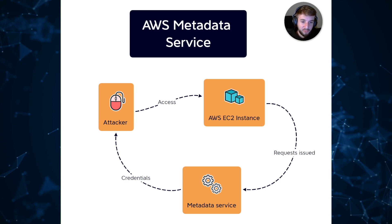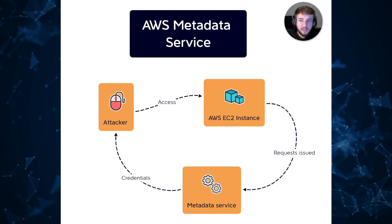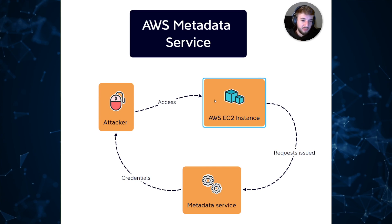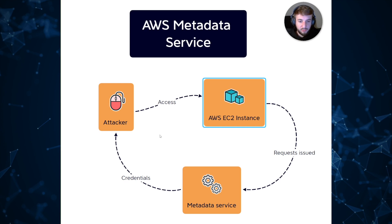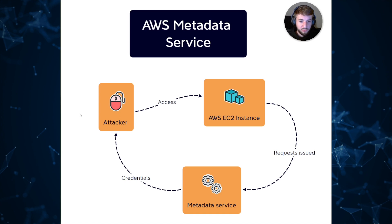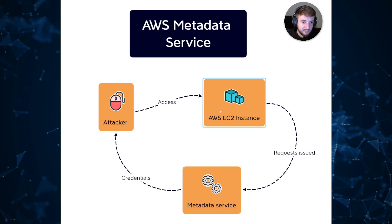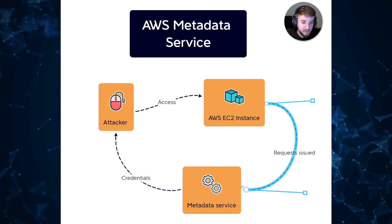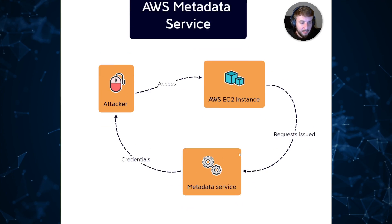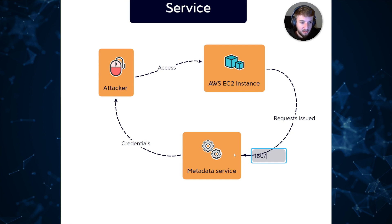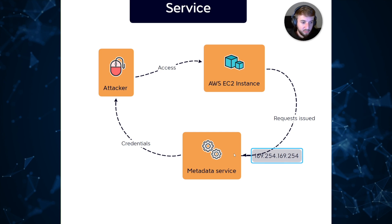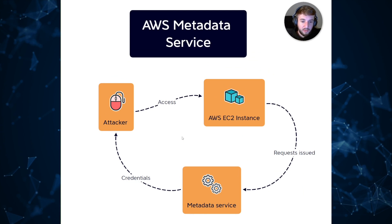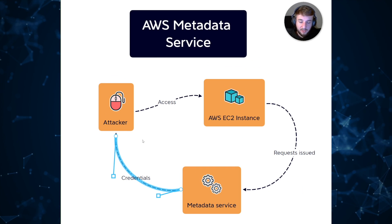The most basic example of how this attack would occur is an attacker gaining access to an EC2 instance using something like SSH — maybe a key pair was left exposed, or a backdoor was placed on the instance. Once they can execute commands on the instance, they can access the metadata service, which is typically running and hosted at 169.254.169.254. It's an internal IP address accessible via simple HTTP requests.